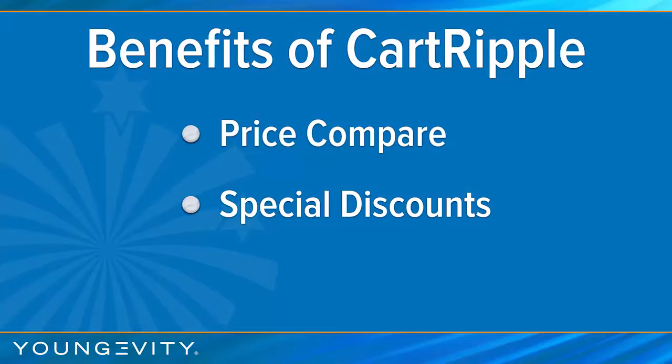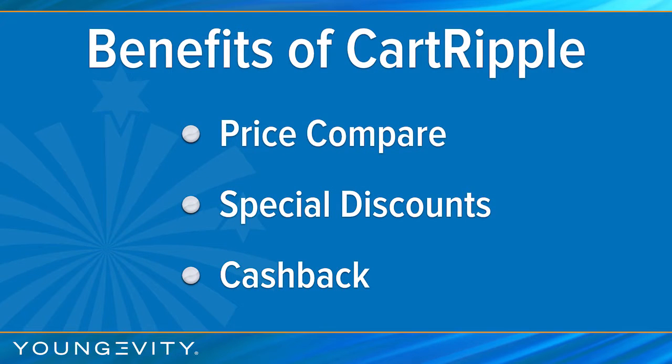Number one, you've got price compare — you just pick the lowest price and buy it. Number two, there are special discounts on Cart Ripple where, because you're part of Longevity Cart Ripple, you'll get different deals from Macy's, Nordstrom's, Sears, JCPenney, and Walmart. There are hundreds of deals on there right now specific to you. So you have the savings engine for price compare, the special deals, and finally you always get cash back as well.